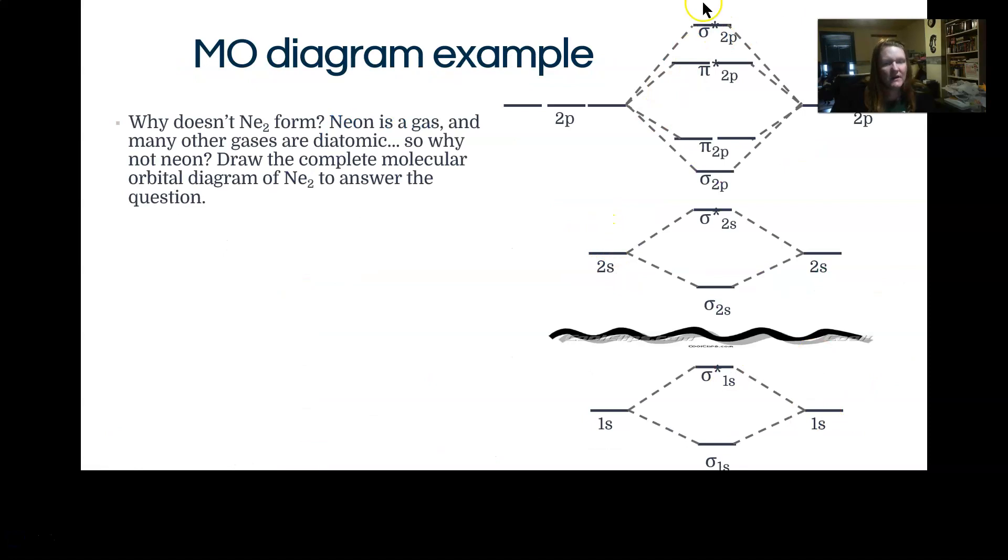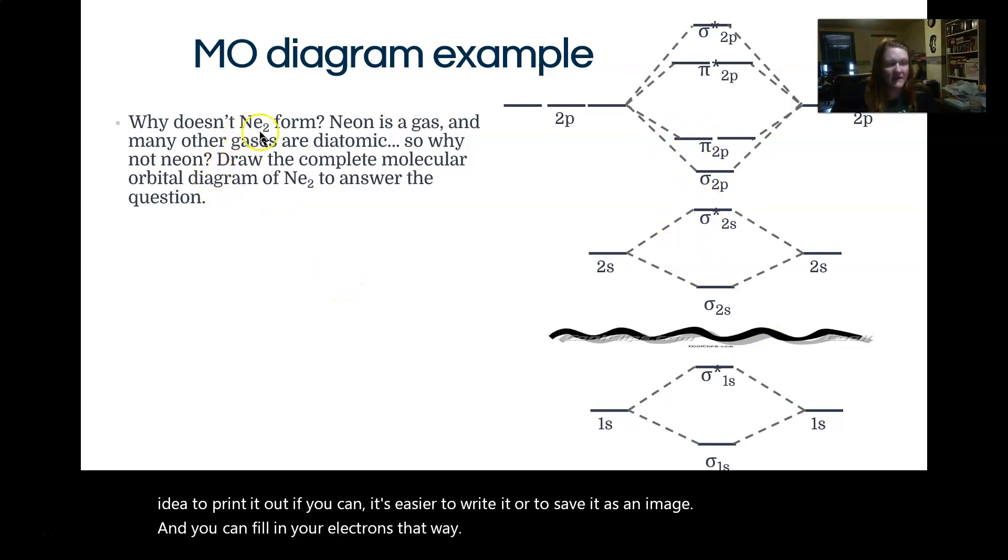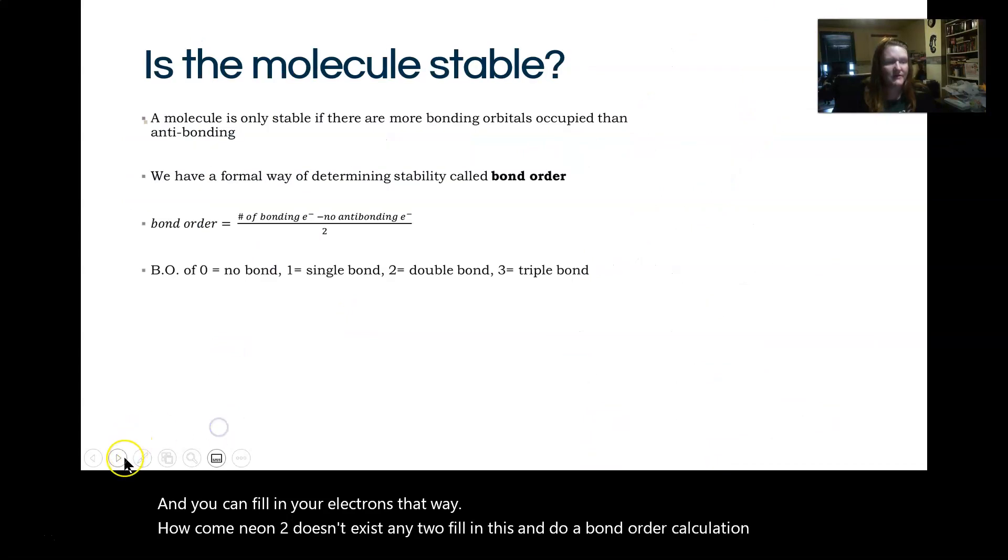So this diagram is an empty one that you can use to answer this question for neon. It's a good idea to print it out if you can. It's easier to write it or to save it as an image. And you can fill in your electrons that way. How come neon 2 doesn't exist, NE2? Well, fill in this and do a bond order calculation and you can find out for yourself.